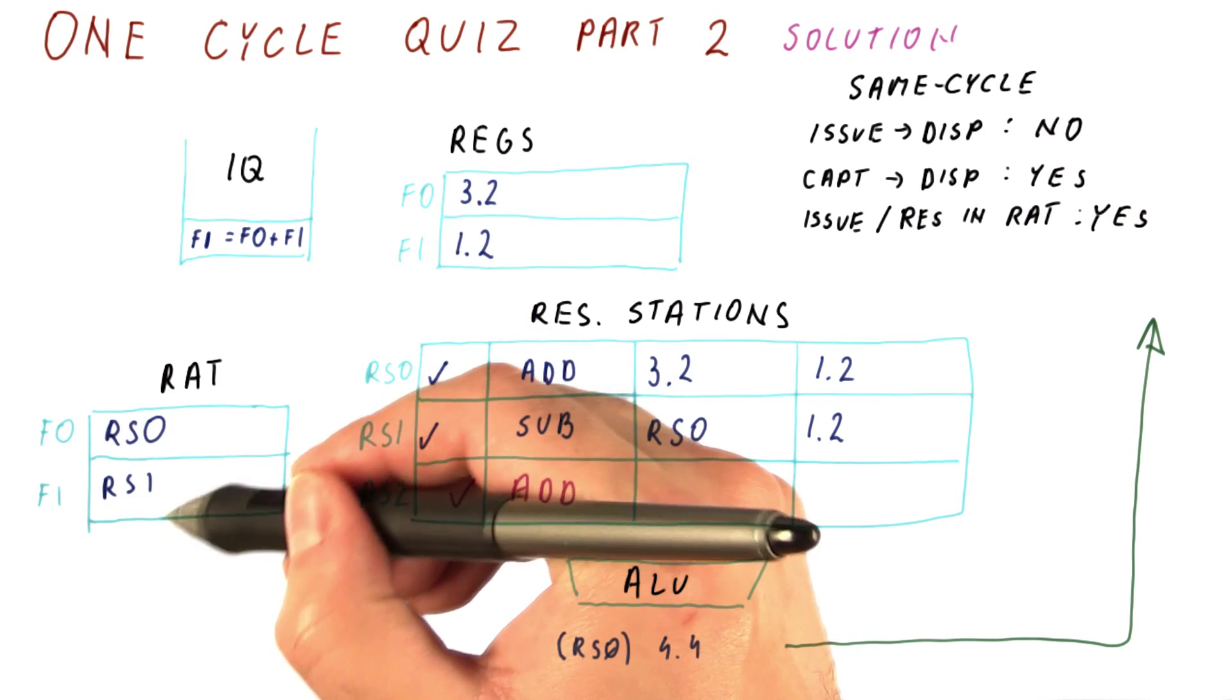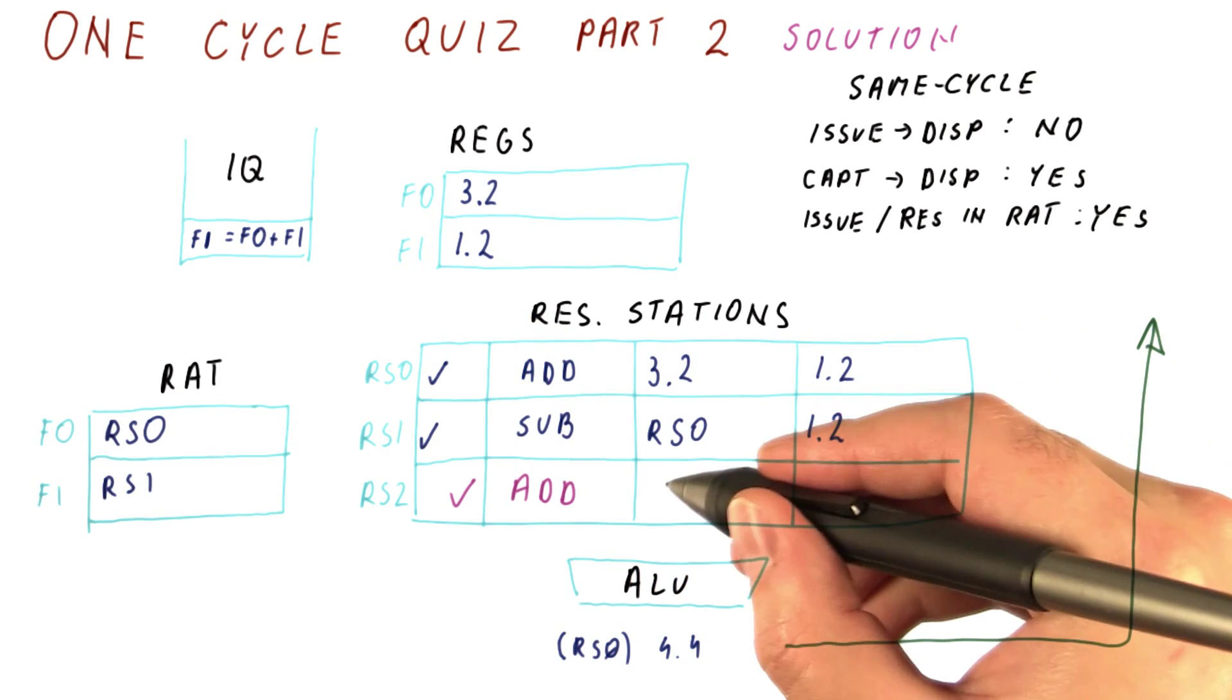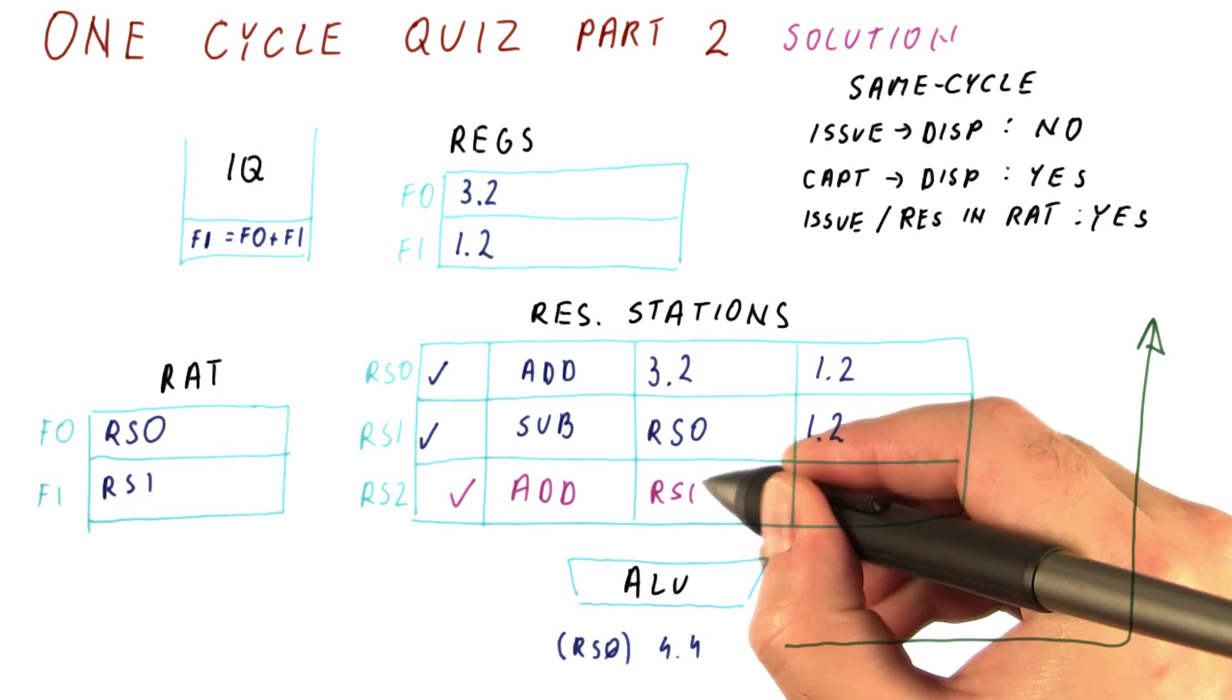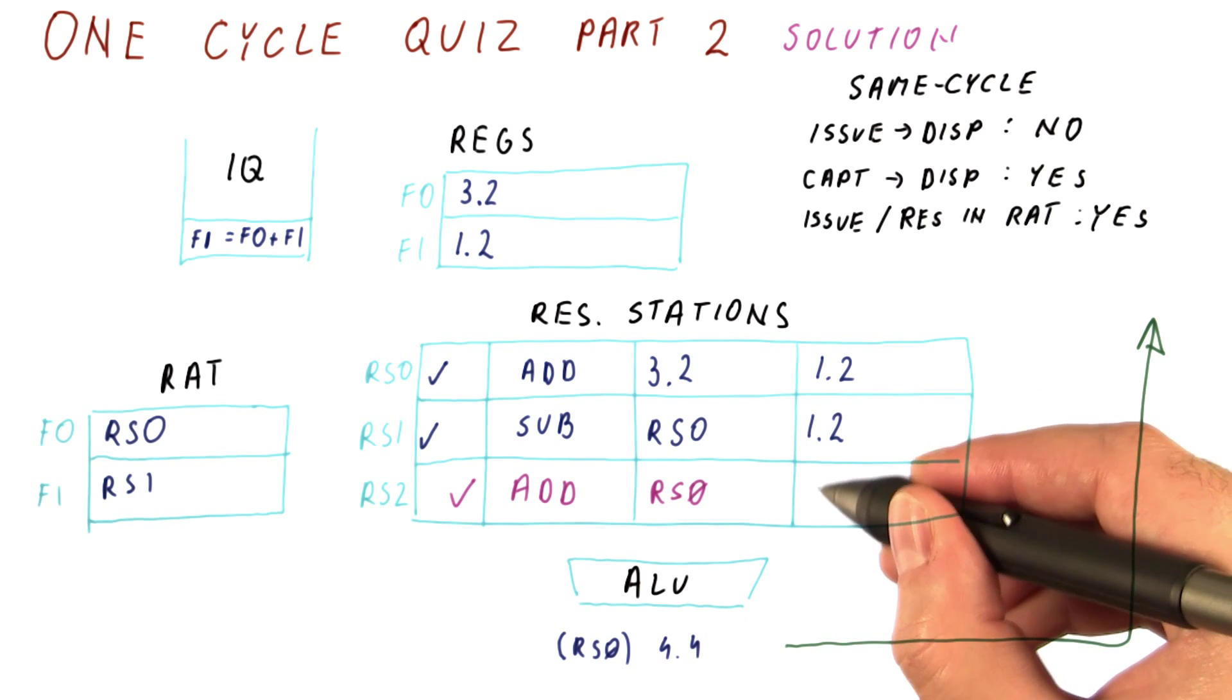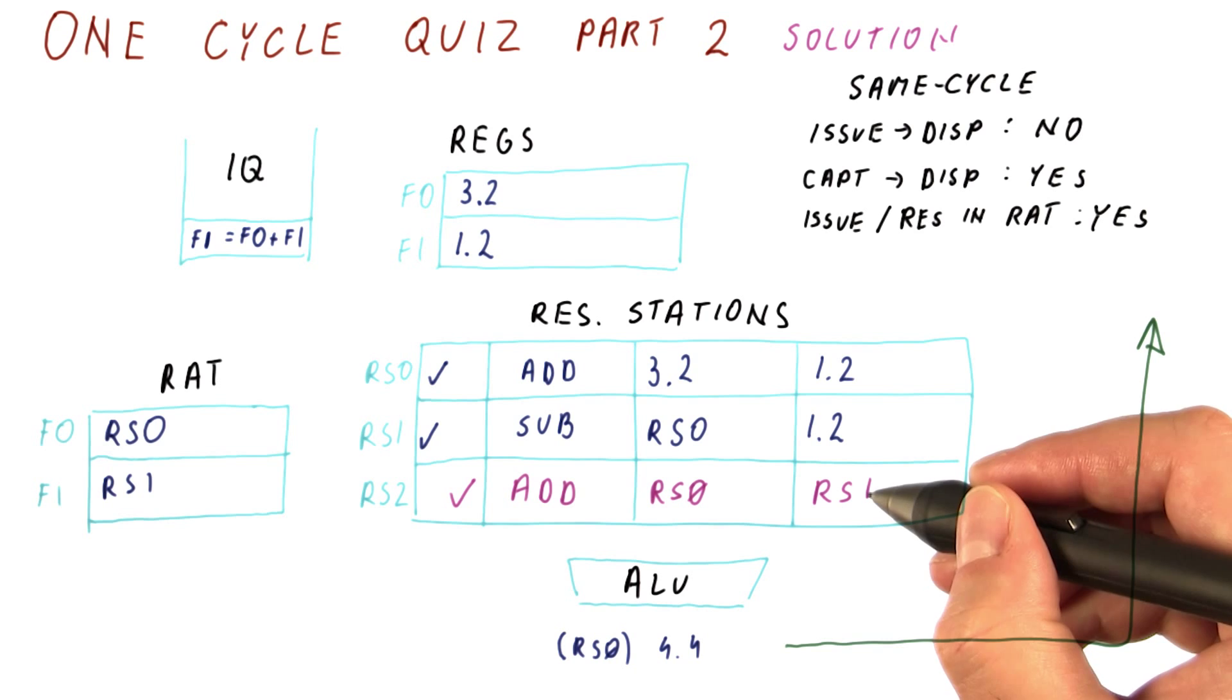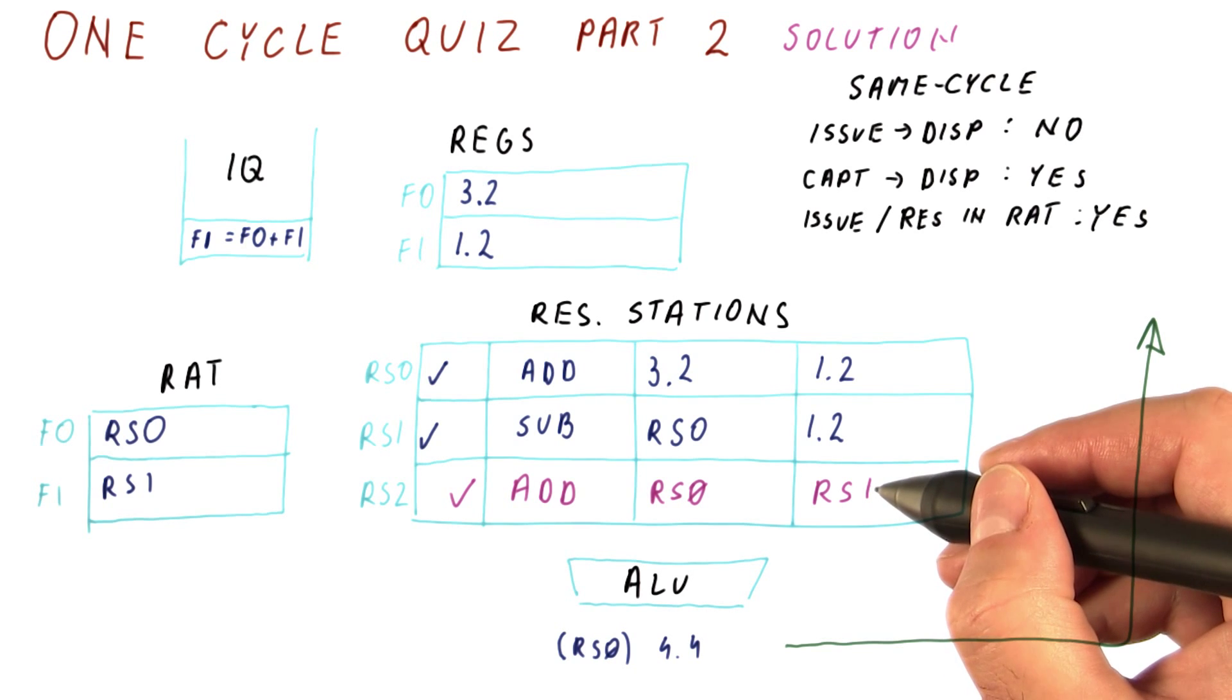Both of these are pointing at reservation stations. So our first operand is whatever RS0 produces, and our second operand is whatever RS1 produces. But that's not the end.